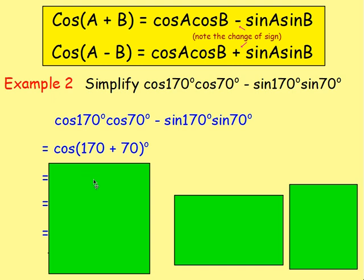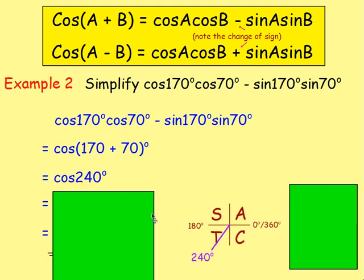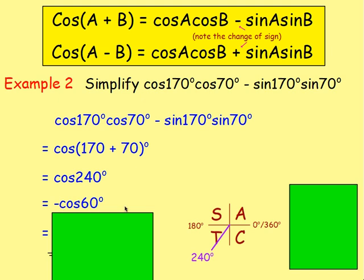From there, don't leave it there — take it further. Ryan, what did you get? Brilliant — cos of 240. Would you leave it like that, Freddie? No, you wouldn't, because you can work that out. You have to use your exact value triangles. Except, if you think about them, you've got 30, 60, or 45 degrees — you don't have 240. So you think about CAST. 240 degrees will be down in T with tan, so cos is going to be negative. It's 60 degrees away from 180, so that's the same as negative cos 60.